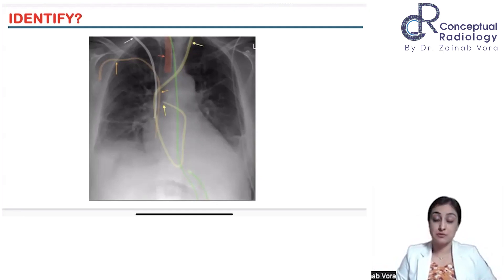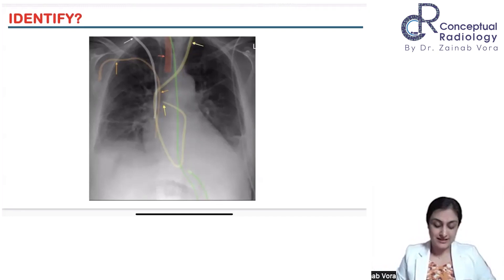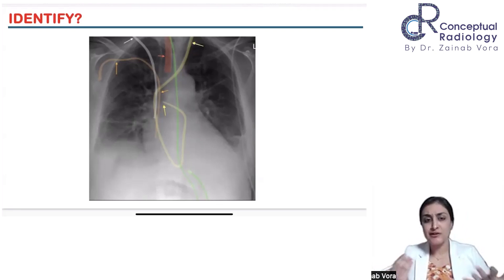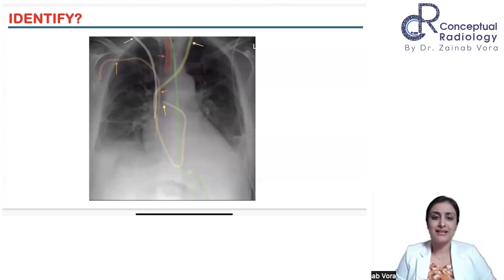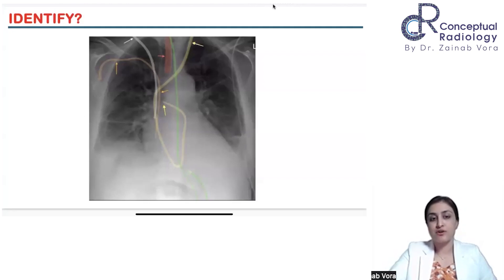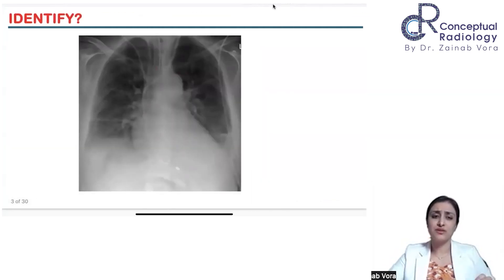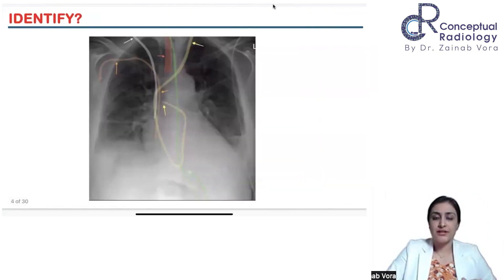The chemoport is not the same as a permacath — a permacath is a tunneled catheter. This patient also has associated findings of probable cardiogenic pulmonary edema: fissural thickening, bilateral pleural effusion, and cardiomegaly. So many lines together usually means a very sick patient.